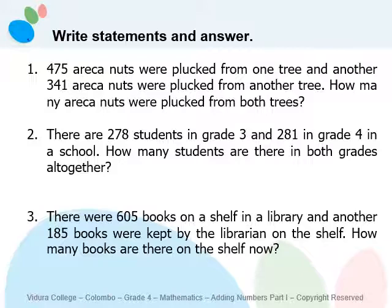Question three: there were six hundred and five books on a shelf and another one hundred and eighty-five books were added by the librarian. How many books are on the shelf now? Statements: books on shelf equals six hundred and five; books added equals one hundred and eighty-five. Five plus five equals ten — write zero under units, carry one to tens. One plus zero plus eight equals nine in tens. Six plus one equals seven in hundreds. The number of books on the shelf is seven hundred and ninety.